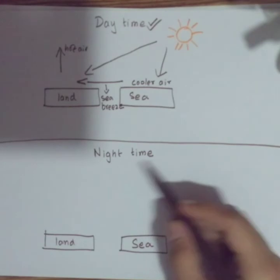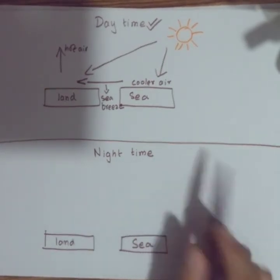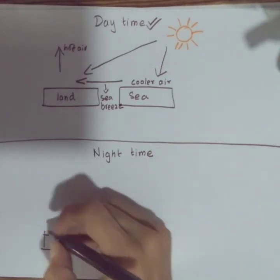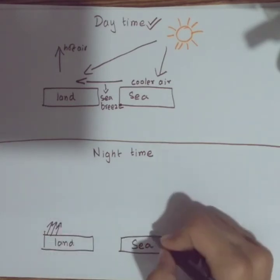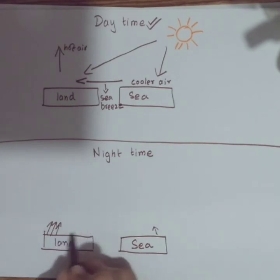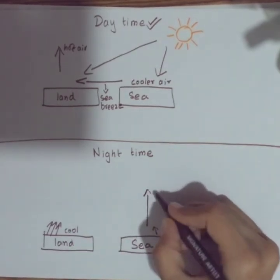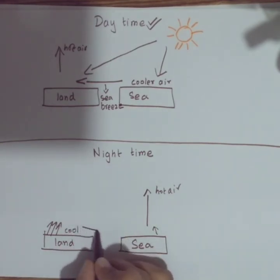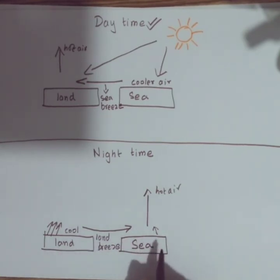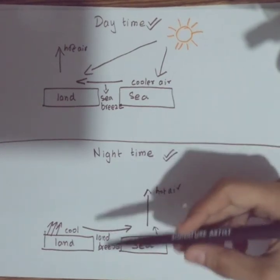At nighttime, the Sun is absent, so the land and sea radiate heat. The land radiates heat faster, so the air over the land becomes cool. The air over the sea is still warmer — it is less dense and rises up. The cooler air from the land then moves towards the sea to replace it. Because it moves from the land towards the sea, we call this the land breeze. Land breezes are active during the nighttime.